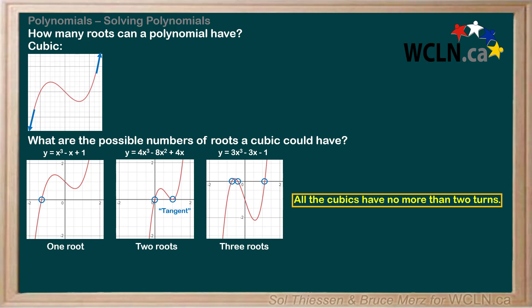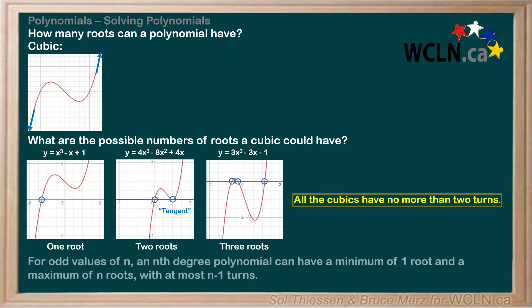Again, these observations extend to all odd degree polynomials. For odd values of n, an nth degree polynomial can have a minimum of one root and a maximum of n roots, with at most n minus 1 turns. The only difference between this conclusion and what we found for even degree polynomials is that odd degree polynomials must have a minimum of one root, rather than zero roots.